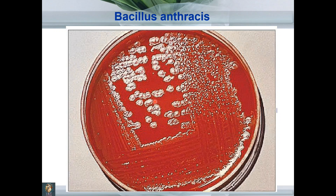Here you can appreciate a blood agar plate with grey-white colonies. If you focus on the shape of these colonies, they resemble a barrister's wig appearance. Grey-white colonies with a barrister's wig appearance grown on blood agar — these are gram-positive rods: Bacillus anthracis.